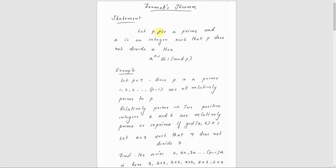P is a prime, and P does not divide A is one condition for satisfaction. We can say that A raised to P minus 1 is congruent to 1 mod P. This is the statement of Fermat's theorem.